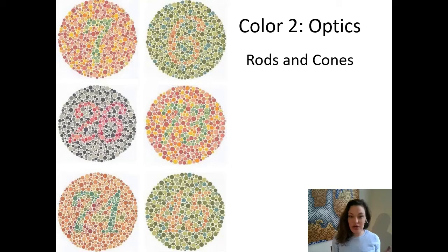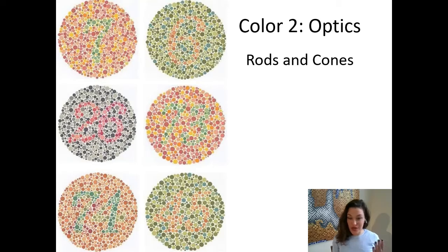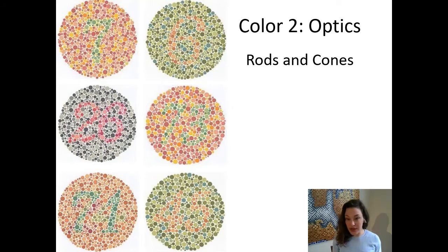Here we have a chart to identify whether you might be colorblind or not. If you can see the numbers here, then you likely have trichromatic vision. If you can't see some of them, you might have dichromatic vision, meaning two sets of cones.